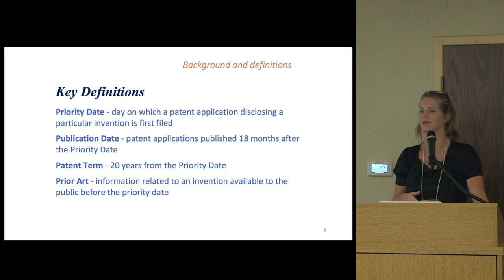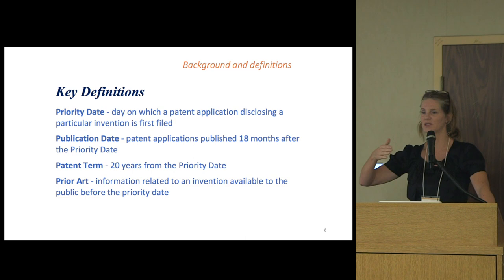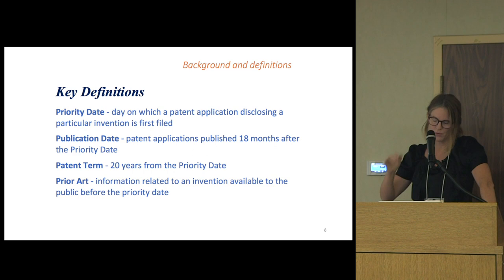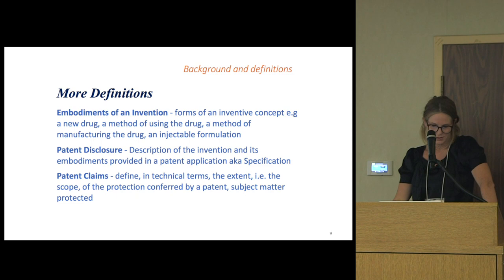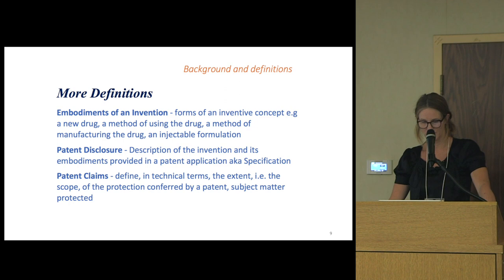In most cases, you're filing patent applications in different countries and they may all publish at different times, but the first application you file is going to publish eighteen months after the priority date. That's the point at which it becomes prior art for other people, including collaborators you work with — so it's an important date to keep in mind. Prior art refers to any information related to an invention that's available to the public before your priority date.